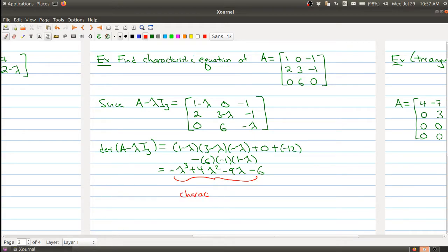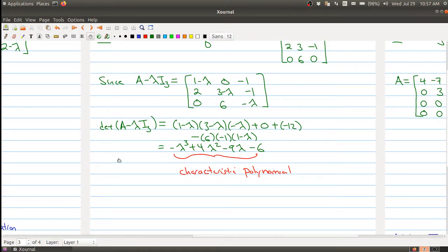And this guy right here, just by itself, is called the characteristic polynomial. So this is the characteristic polynomial. And when we set this guy equal to 0, then we call that the characteristic equation. So let's do that.